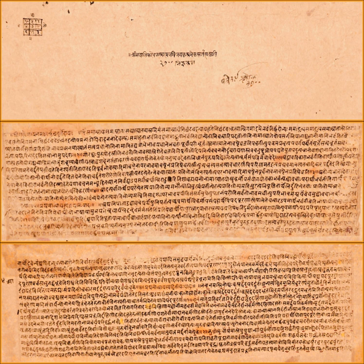Nirukta, in Sanskrit, means 'explained' or 'interpreted,' and refers to one of the six ancient Vedangas, or ancillary sciences connected with the Vedas, the scriptures of Hinduism.